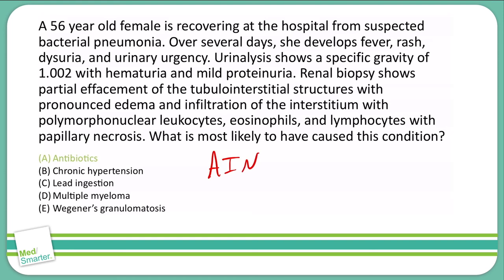Multiple myeloma doesn't really fit — remember, that's associated with Bence-Jones proteins. Wegener's is a focal segmental glomerulonephritis that gives us crescent formations and also pulmonary disease, which could confuse you a bit. A patient that doesn't present with pulmonary disease but has the renal disease would help you rule that out due to the lack of pulmonary associations.